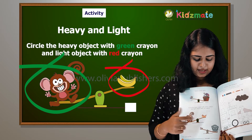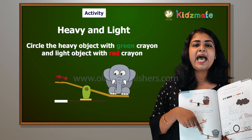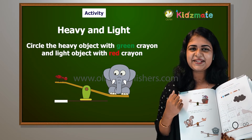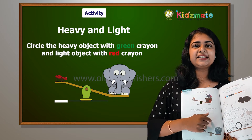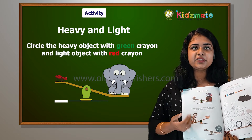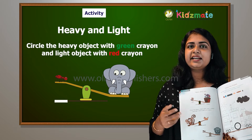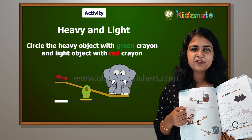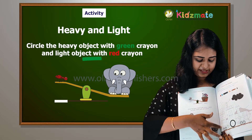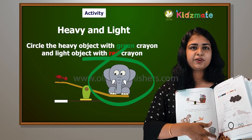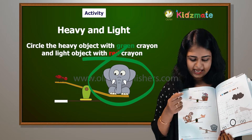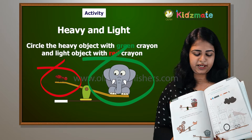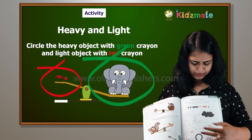Let's look here — elephant or ant. Tell me, elephant or ant? Elephant or ant? Definitely elephant. The elephant is heavy. We call it green crayon — circle, and red crayon — circle in the middle of the shape.